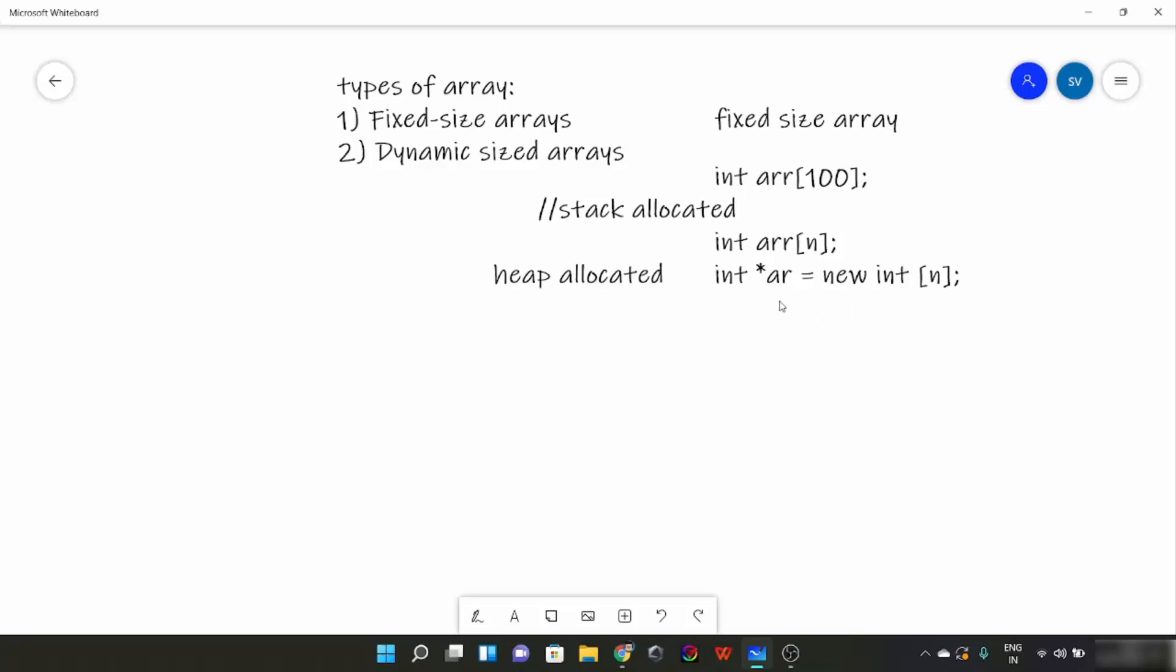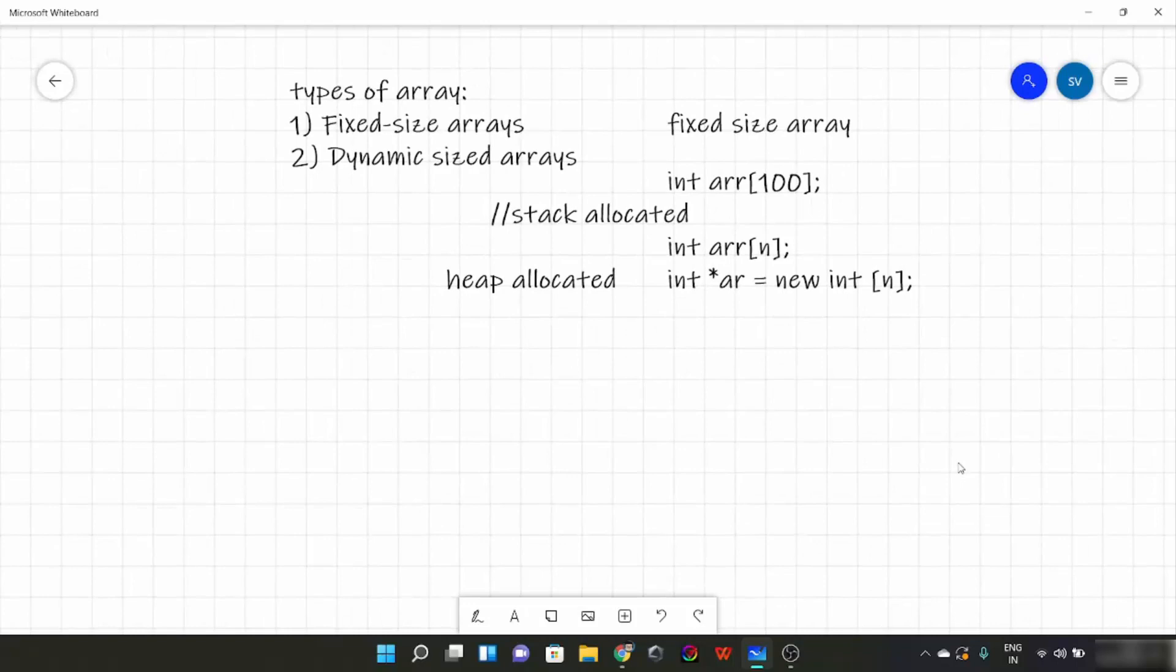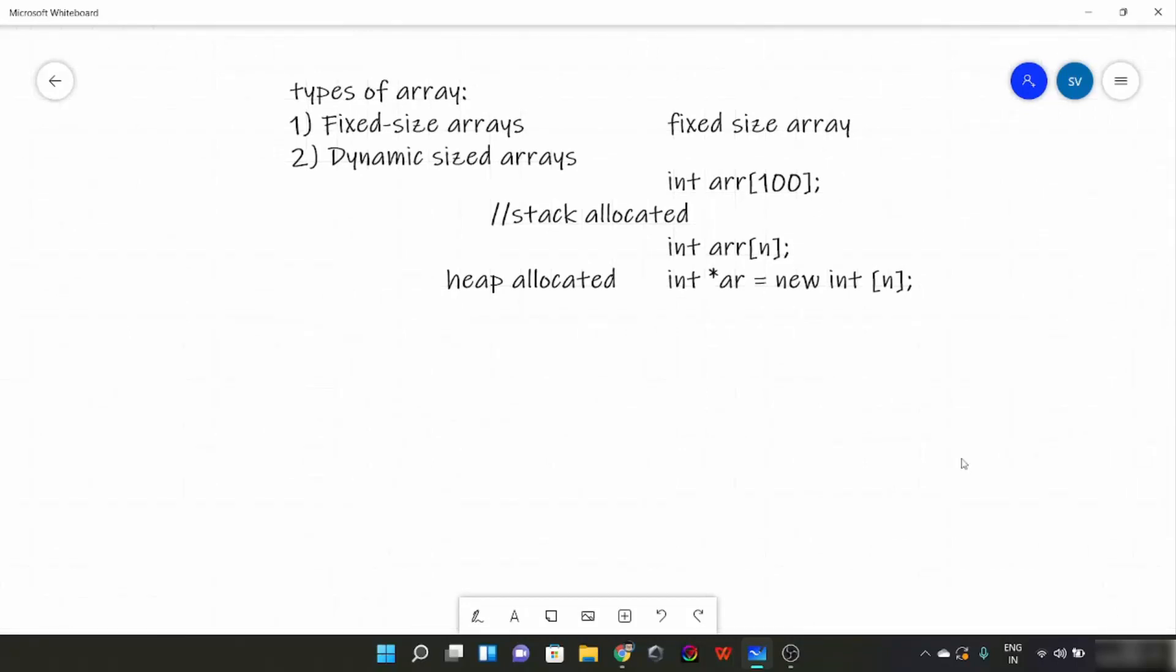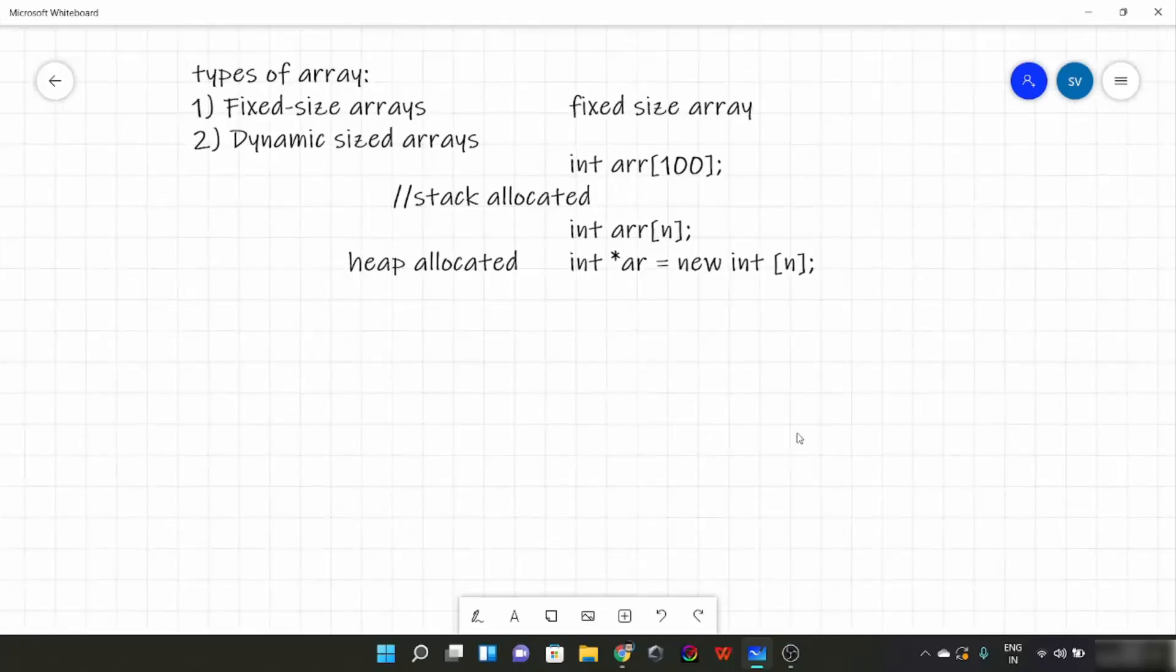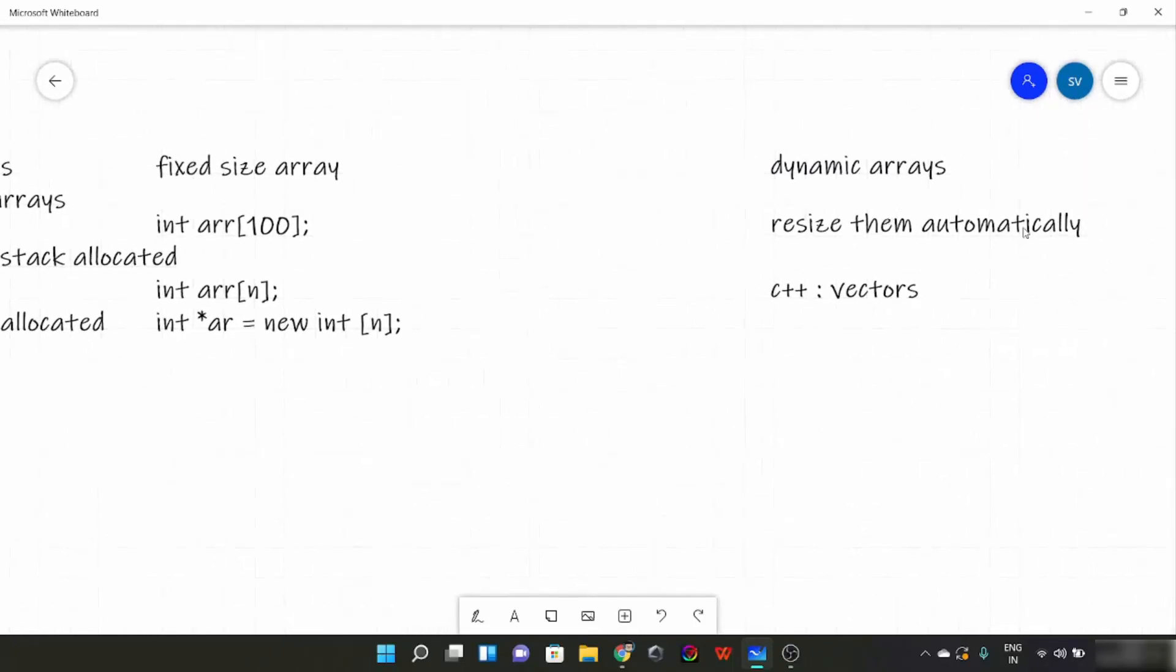Now let's talk about the second type, which is dynamic-sized arrays. So dynamic-sized arrays automatically resize them when we add more items. Dynamic arrays resize automatically. So in C++ we use vectors for it. Vectors are basically arrays, but here the size automatically increases or decreases as we insert or delete an element.